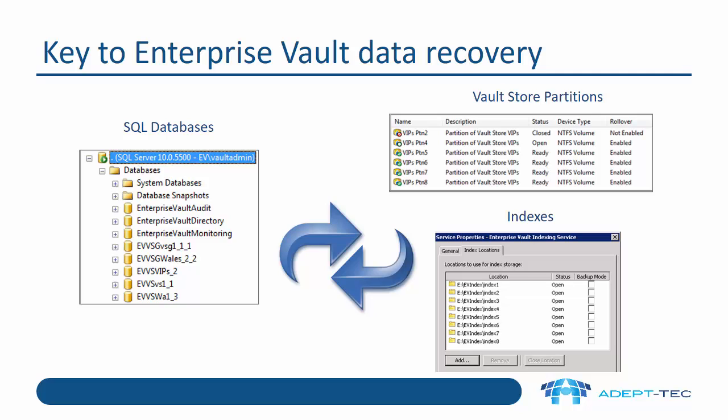Now in a recovery situation, we may need to recover one of these back to a different state from the others. So for instance, if the SQL server completely fails, then we recover the previous backup, then SQL is earlier than the Vault Store partitions and indexes. And then we have a problem, so we need to somehow get them back into sync. And that's what we're going to talk about now.